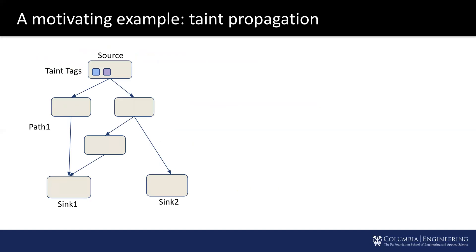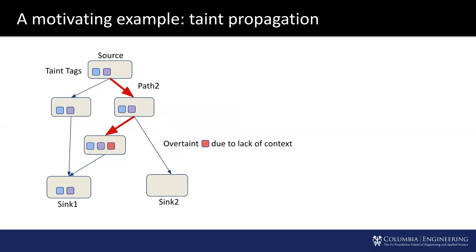Before we dive into the details, let's walk through this idea on a motivating example. Say we have a simple program with a taint source, two taint sinks, and multiple paths. Common applications like fuzzing would like to track information flow among all the paths. From the source, we execute along path 1 and propagate the taint tags to sink 1. Then we execute along path 2, propagating the blue and purple taint tags.